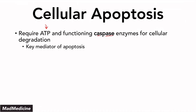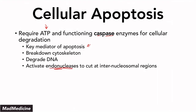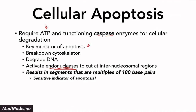Caspases are the key mediators of apoptosis. They break down the cytoskeleton and degrade the DNA by activating endonucleases, which break down DNA. The main thing you need to take away is that when the DNA is broken down, it results in segments that are 180 base pairs long. This is very high yield — do not forget this because it will come up over and over again. You can be given a question where the apoptotic event is alluded to by saying a researcher found multiples of 180 base pairs in the isolate. This is a very sensitive indicator of apoptosis.